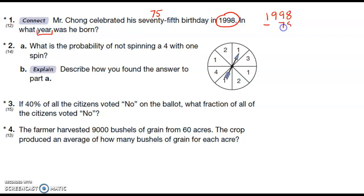Number two: What is the probability of not spinning a four with one spin? So it's the probability of not four. What are my totals? 1, 2, 3, 4, 5, 6, 7, 8. So I have eight total and how many fours do I have? Just the one. But this is the probability of not four, so it's going to be 7/8. Describe how you found your answer. I counted the whole and then I counted the part that I wanted.